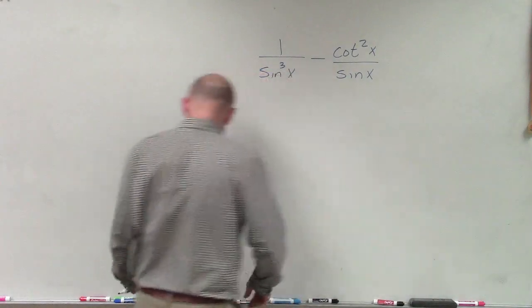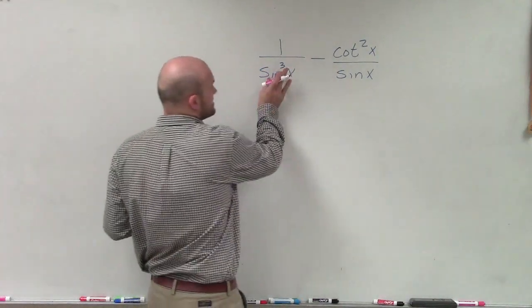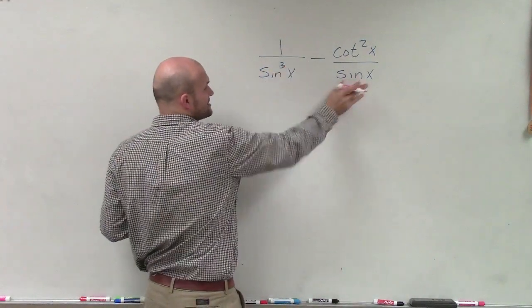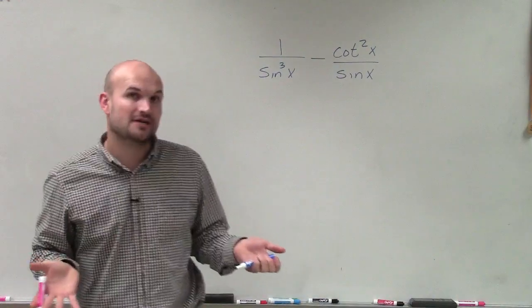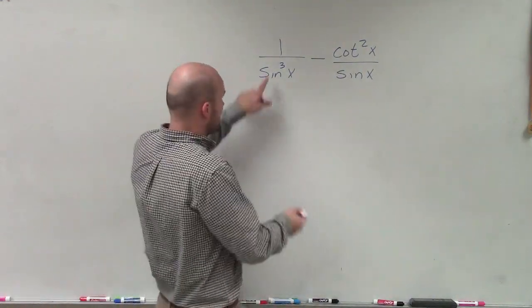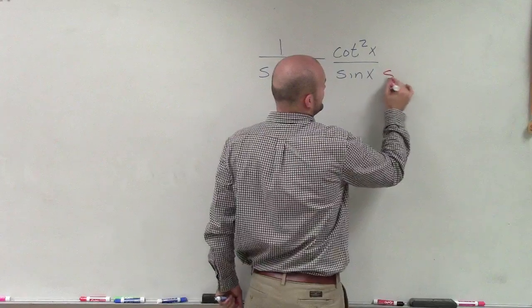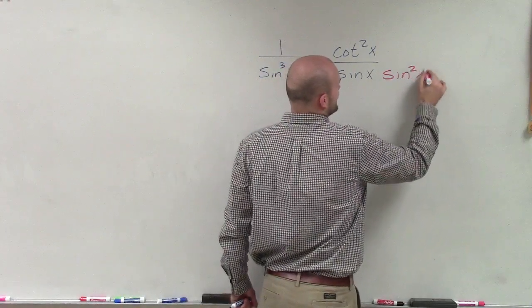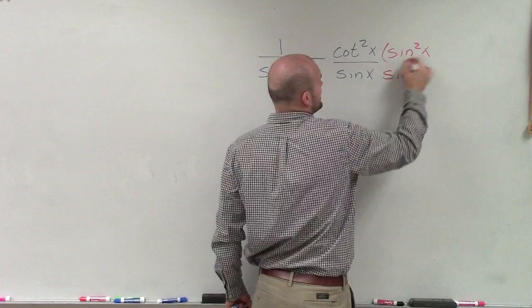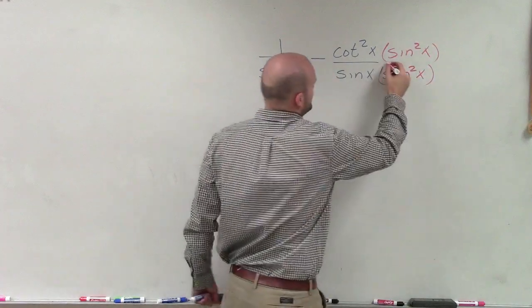So to do that, I'm going to have to multiply to get common denominators. So since this is sine cubed and this is sine, the common denominator is going to be sine cubed. So I already have sine cubed here. So to get this to be sine cubed, I'll have to multiply by sine squared of x on the top and on the bottom to make sure we keep equivalent fractions.